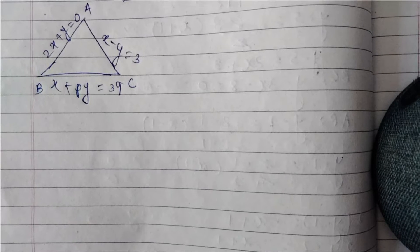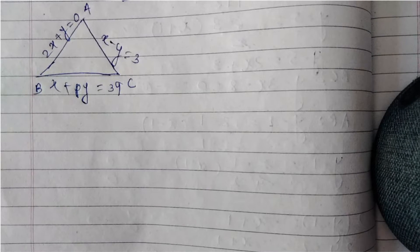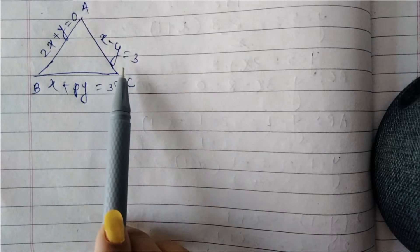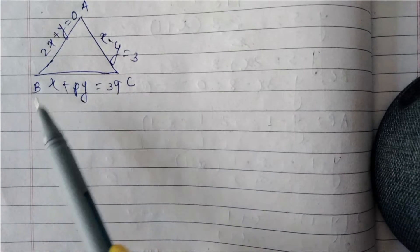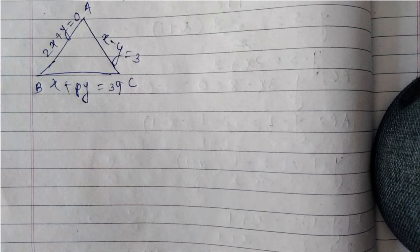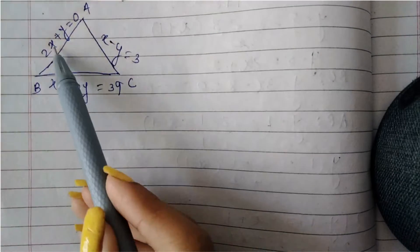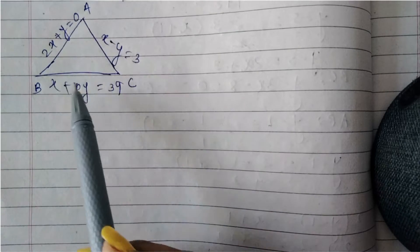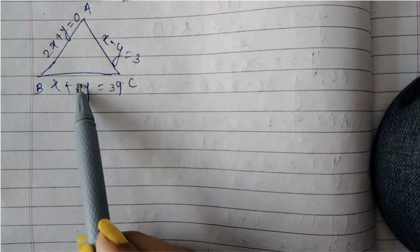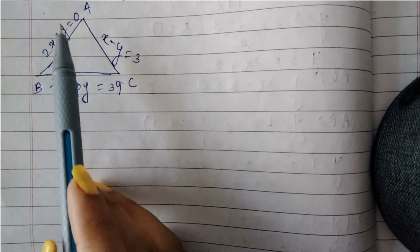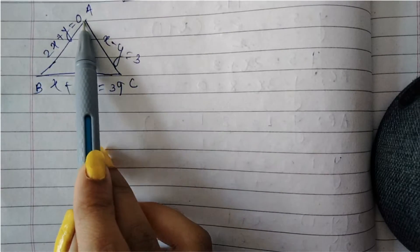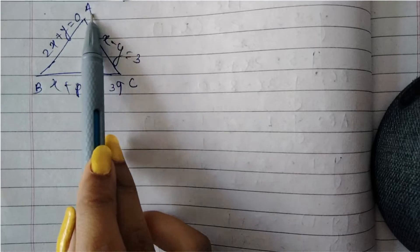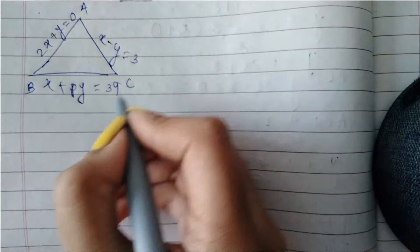Let us first assume a rough diagram of the triangle. Let this be triangle ABC with sides x minus y equals 3, 2x plus y equals 0, and x plus py equals 39. We have three sides, one of which contains the unknown p. We can find the intersection of the first two equations to find the coordinates of vertex A.